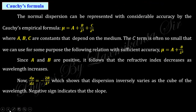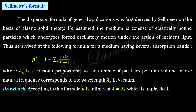Normal dispersion is explained by Cauchy's relation: μ = A + B/λ² + C/λ⁴, so as λ increases, μ decreases. The Sellmeier formula is a generalized form that can explain both normal and anomalous dispersion. However, it has a drawback: at λ = λ_k (the resonant wavelength in vacuum), the refractive index becomes infinite, which is unphysical. Otherwise, the formula satisfies both phenomena.